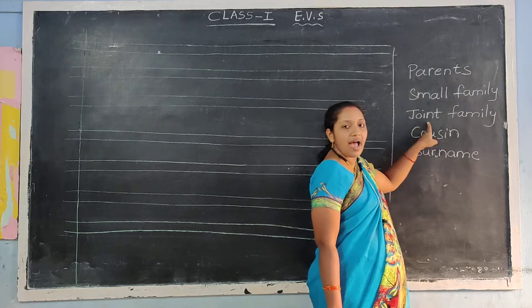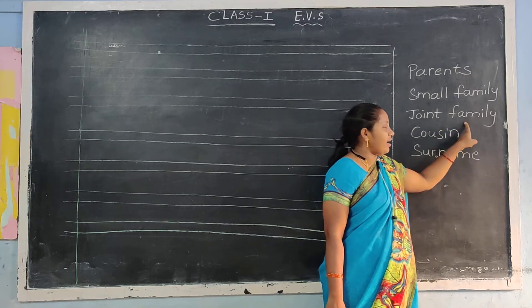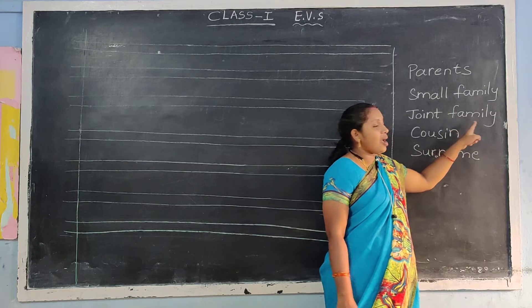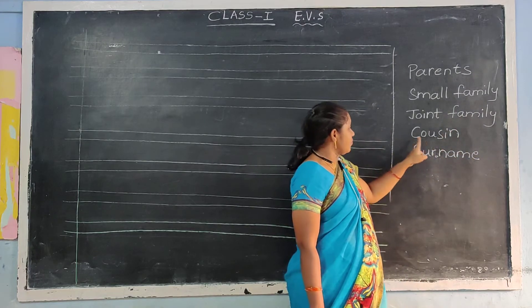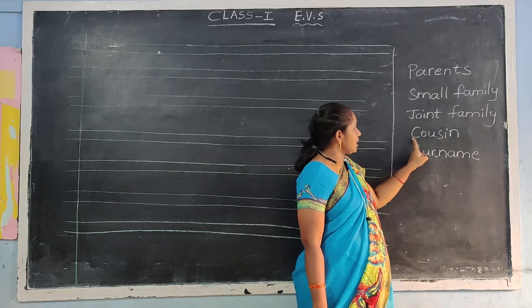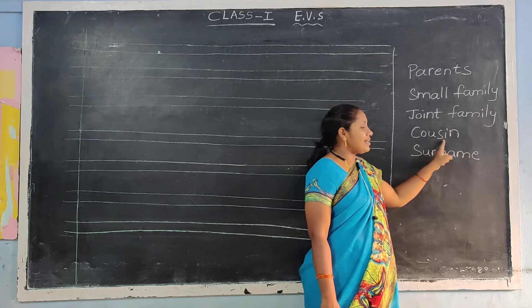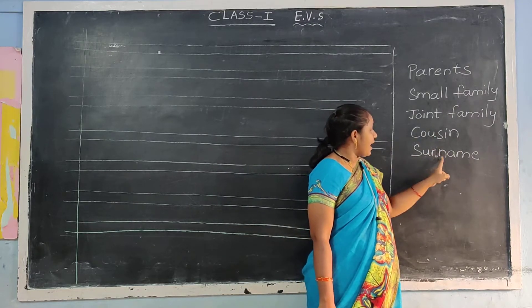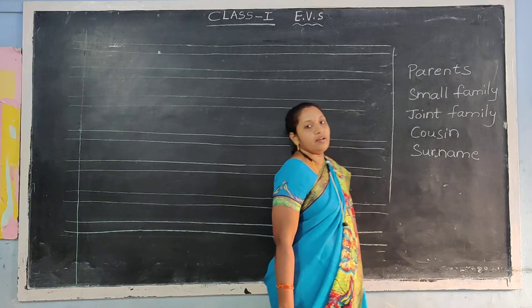J-O-I-N-T — joint. F-A-M-I-L-Y — family. Joint family. C-O-U-S-I-N — cousin. S-U-R-N-A-M-E — surname. Okay.